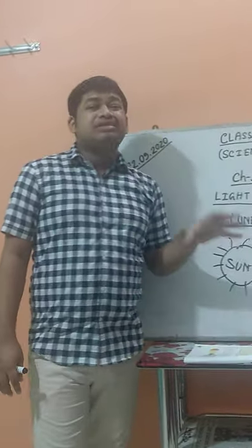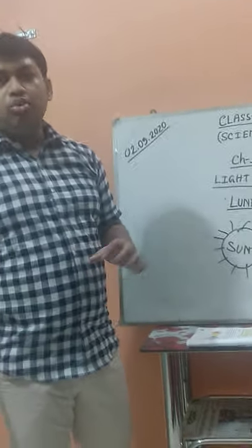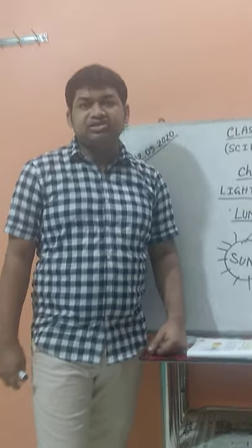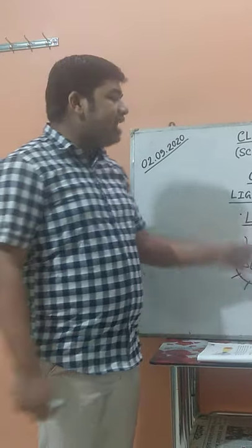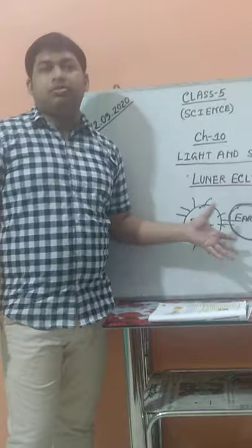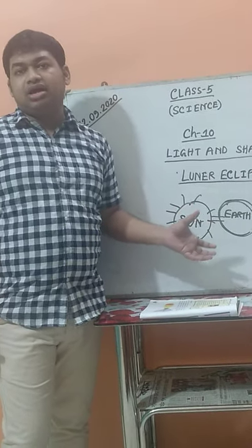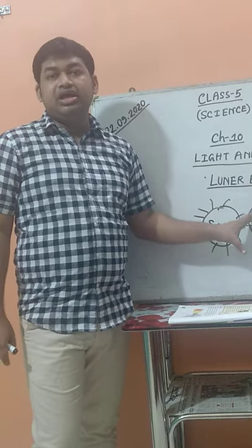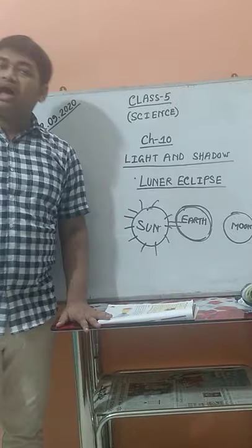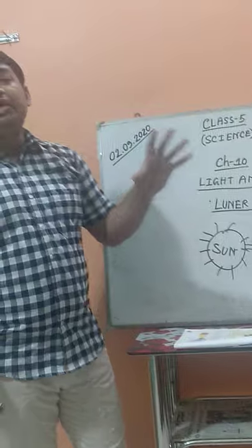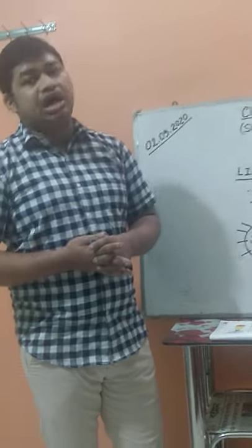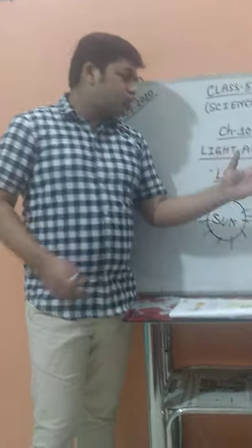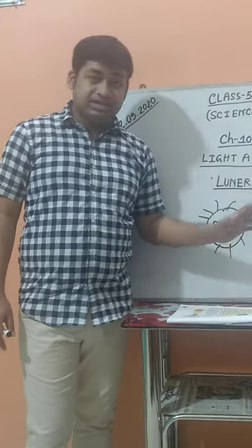One more thing you have to learn — what is the Umbra and Penumbra? This is not in your book, but you need to know for further information. When light is completely absorbed or totally obstructed, the blackest or darkest portion of the shadow is called the Umbra. When the shadow is only partially dark, that lighter dark portion is known by the name of Penumbra.